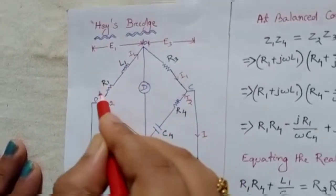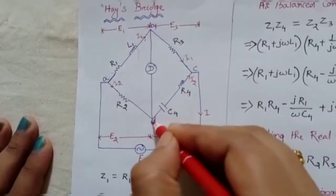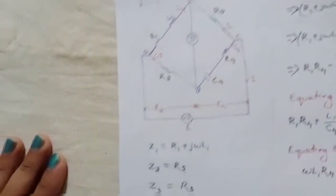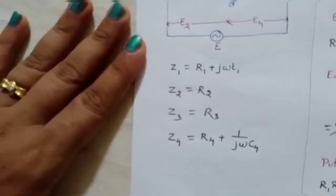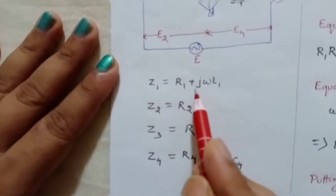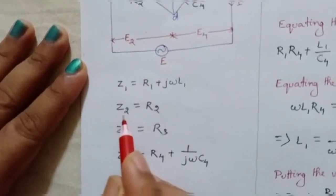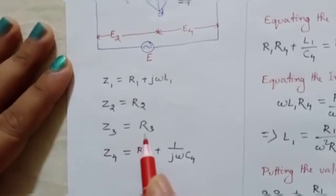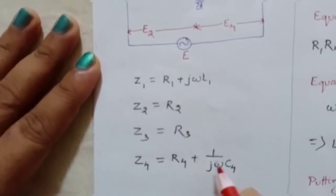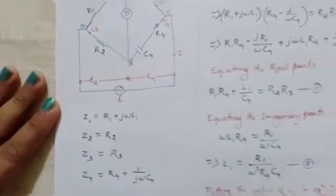This is the circuit diagram. The unknown parameters are L1 and R1, which we have to find out, along with R3 and R2. In branch 4, we have a series combination of capacitor C4 and resistor R4. So let's write down the equations for Z1, Z2, Z3, and Z4. Z1 is a simple RL circuit, so Z1 = R1 + jωL1. Z2 is simply R2, Z3 is R3, and Z4 = R4 + 1/(jωC4), since it is a series combination of R and C.